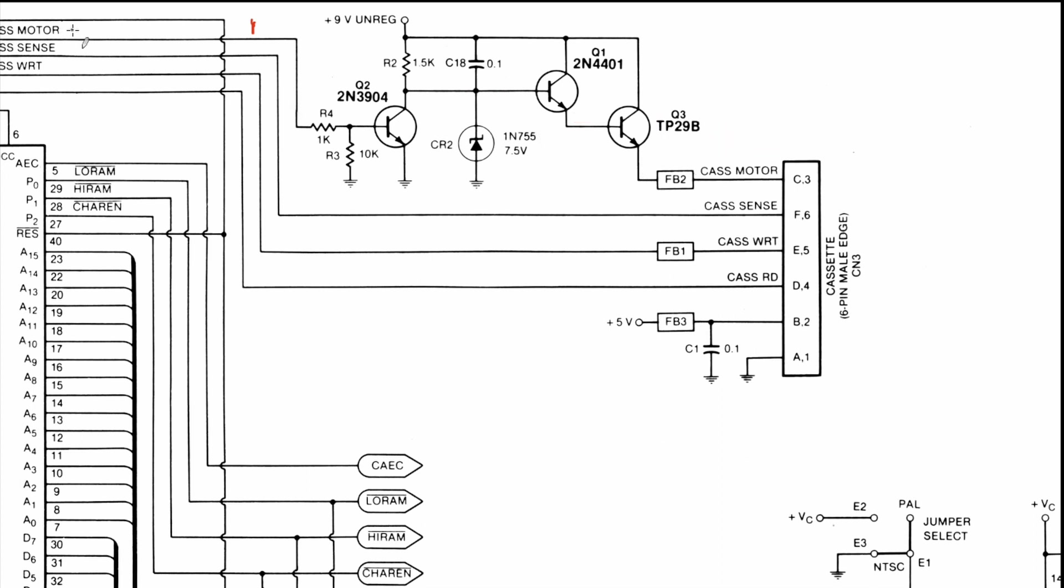When there is a high state on this cassette motor output what happens is current flows through this line into the base of this transistor activating it. This provides a low impedance path to ground and that causes this line here to not have enough current to activate this transistor. So this one is not active. So the 9 volts can't travel through this transistor which in turn causes this transistor not to activate meaning the 9 volts cannot travel through it either and then you get a zero volt output on this cassette motor out.